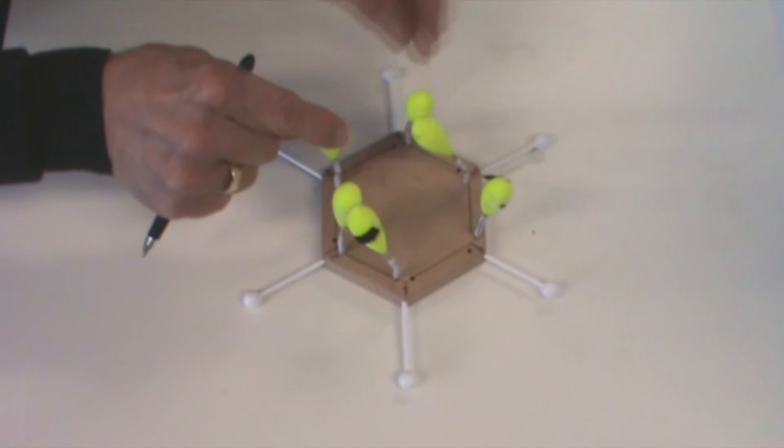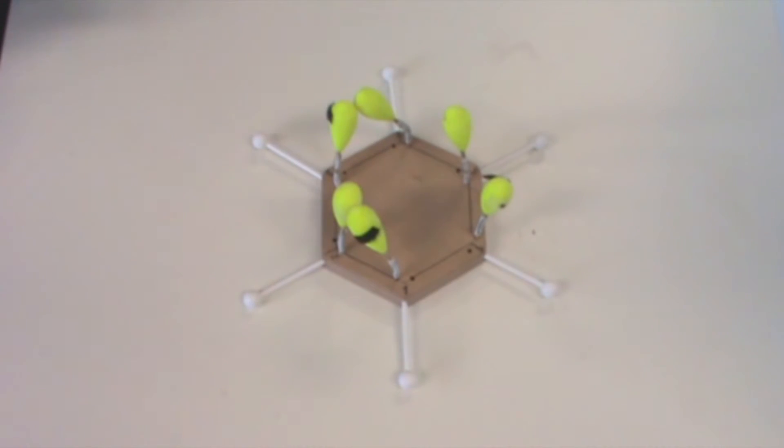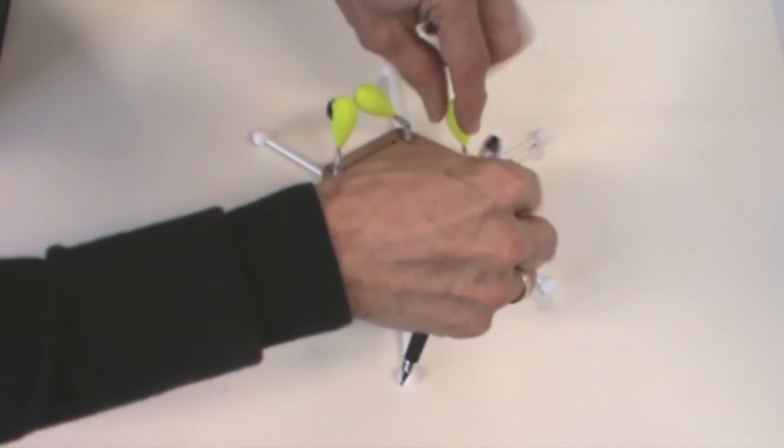So I'm going to number four, and then this one can form another double bond. And now five and six can do this as well.